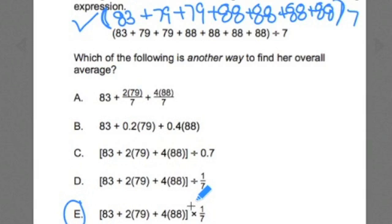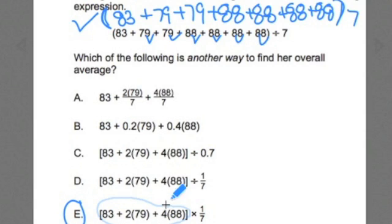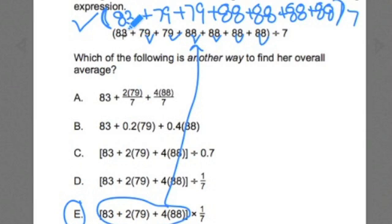We've got a PEMDAS order of operations going on. What this is saying is that I have two 79s — one here, one here — and I have four 88s — one here, one here, one here, one here. And we're going to be adding these values up just like we add them out in the original expression. This part of the expression is the expanded form, and the original is the abbreviated form — but it's going to get you to the same total sum of all the scores.